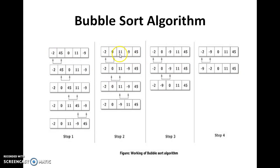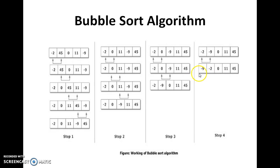In the next step, minus 2 will be considered as the smallest — it will be retained as is, and this process continues. At the end of the fourth iteration, we will have the numbers sorted in ascending order. You can observe: minus 9, minus 2, 0, 11, and 45. This is the basic concept of the bubble sort algorithm.